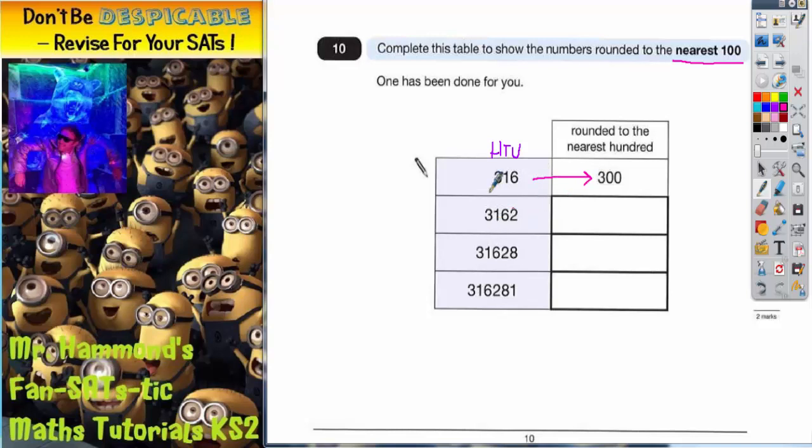Let's look at the next one. I've got 3162 and I want to be careful here that it's the number in the hundreds column that I need to round. This one here. I'll look to the next digit to help me decide.